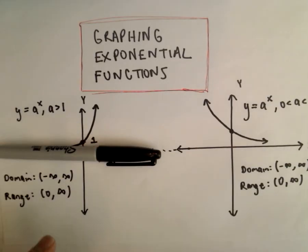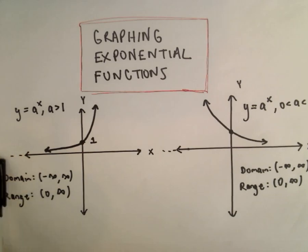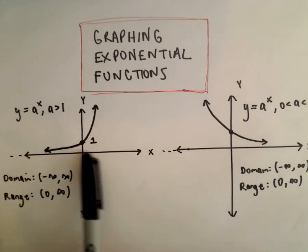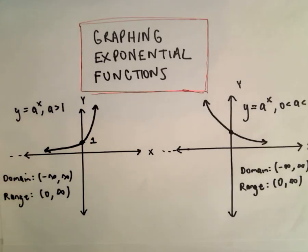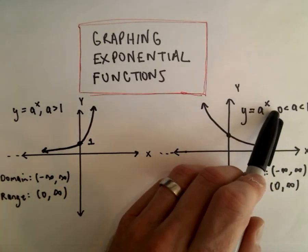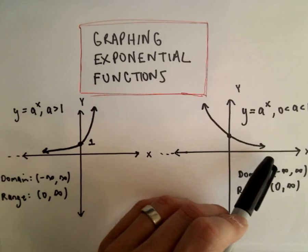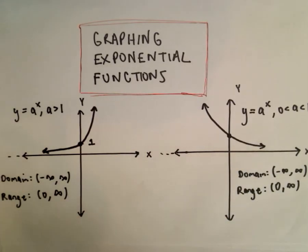The function never quite hits the X-axis. It gets arbitrarily close to the Y value of 0, and that means we have a horizontal asymptote of Y equals 0. There's no vertical asymptote. If your A value is between 0 and 1, you get an exponential function that's decreasing — same domain, same range, same horizontal asymptote.